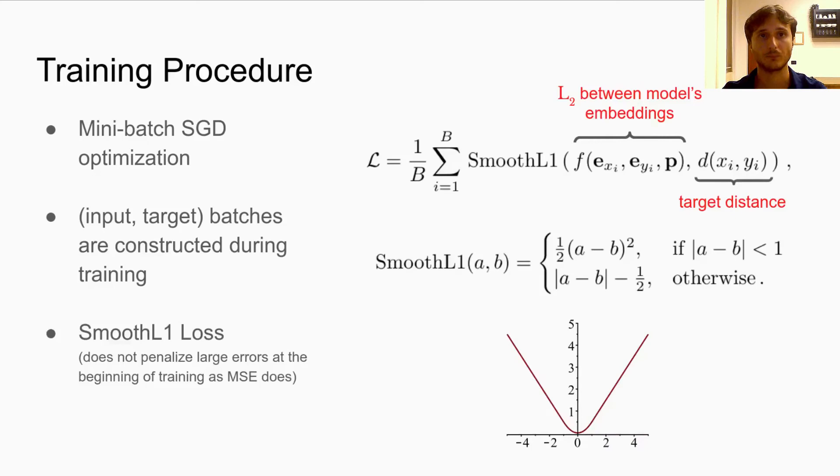The loss function we optimize is the average smooth L1 loss between the predicted distance and the target distance. The smooth L1 loss function is used to avoid instabilities due to large errors at the beginning of the training process. When the error is low enough, it behaves like the classical mean squared error.